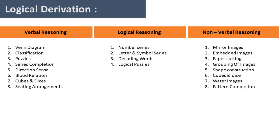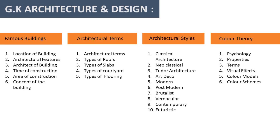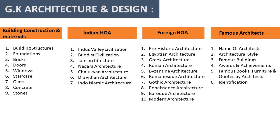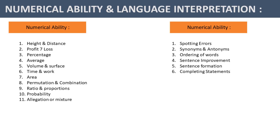We will be discussing all of them one by one in the coming videos. Talking about GK and architecture, you have famous buildings, architectural terms, architectural styles, color theory, famous architects and their works, building construction, HOA, foreign HOA, and famous architects. Then coming to numerical ability and language interpretation, these will all be the topics for your numerical ability and language interpretations.